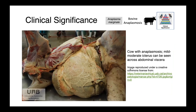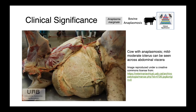This image shows a post-mortem examination of a cow that died with anaplasmosis. What to appreciate here is mild to moderate icterus seen across the abdominal viscera, indicating hyperbilirubinemia associated with the extravascular hemolysis seen with Anaplasma infections.